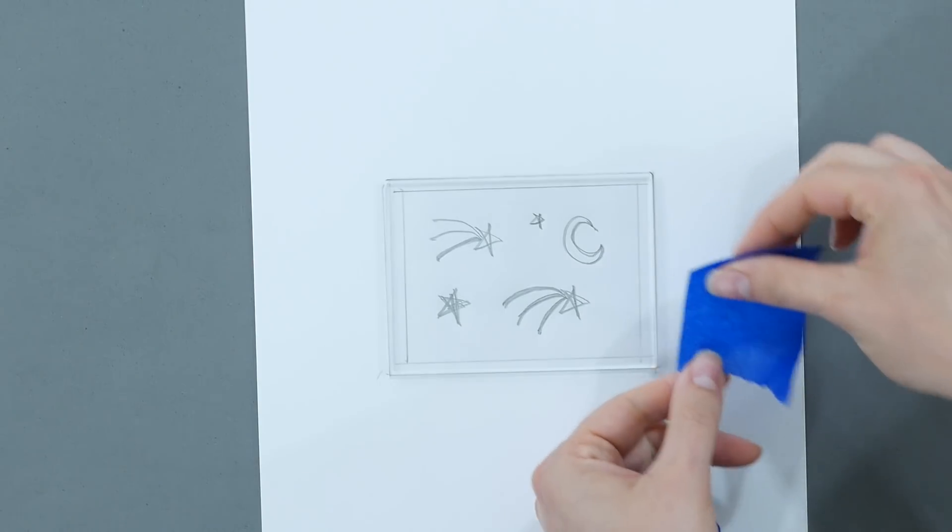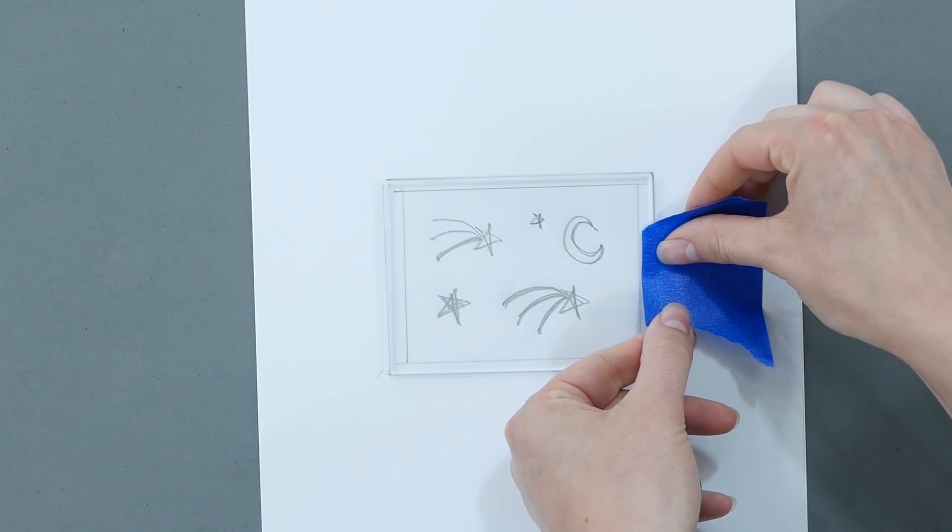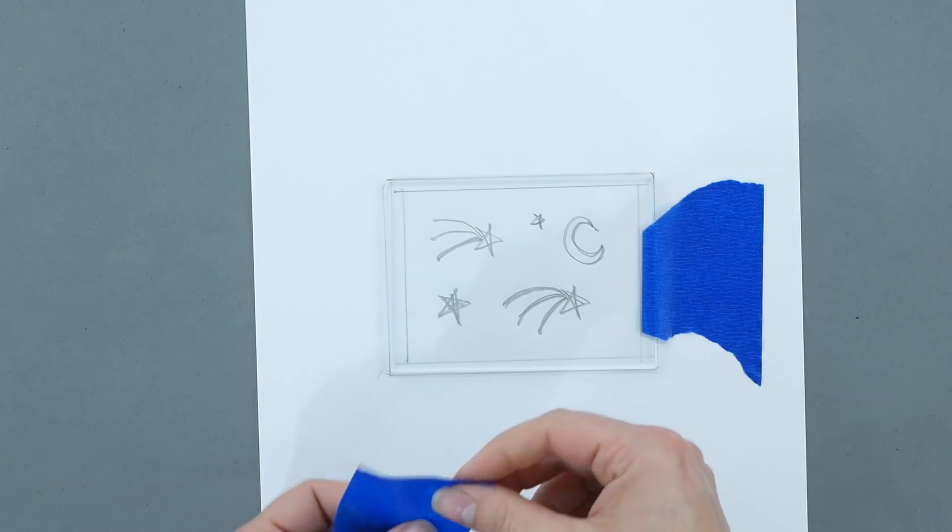Now that I have my design I'm going to tape my acrylic down so that it doesn't shift and I get a good alignment with my acrylic and the design.